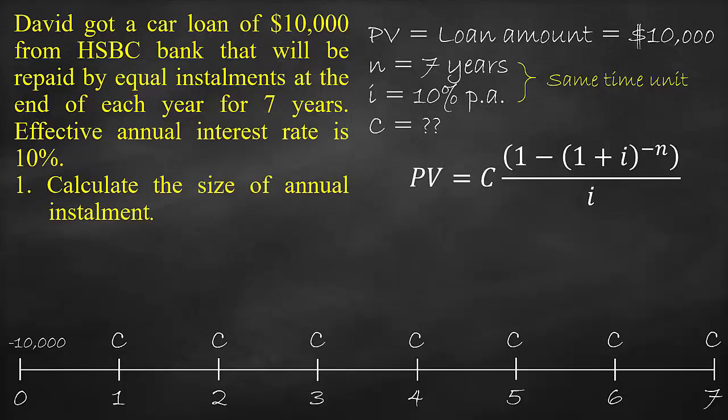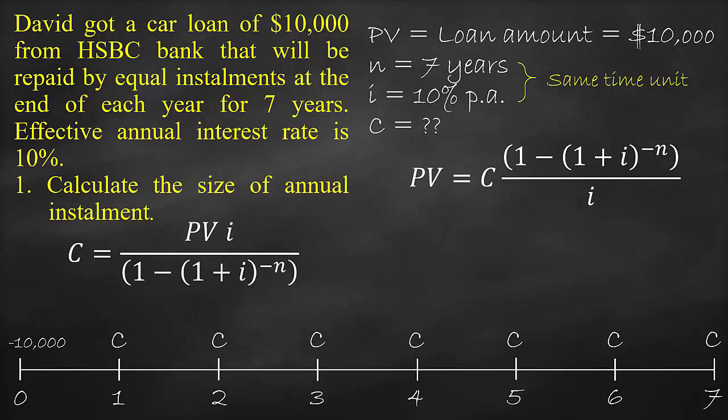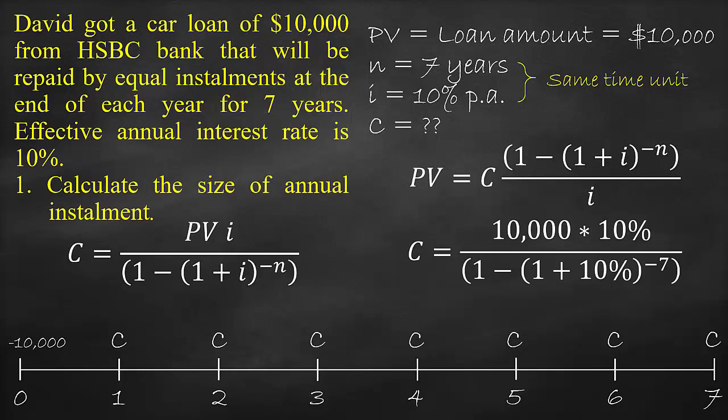We need to rearrange the present value of an ordinary annuity formula to get the periodic cash flow, which is the periodic instalment. The formula is: C equals the present value times the interest rate divided by 1 minus (1 plus the interest rate) to the power of negative 7. Therefore, C equals $10,000 times 10% divided by 1 minus (1 plus 10%) to the power of negative 7, which equals $2,054.05.